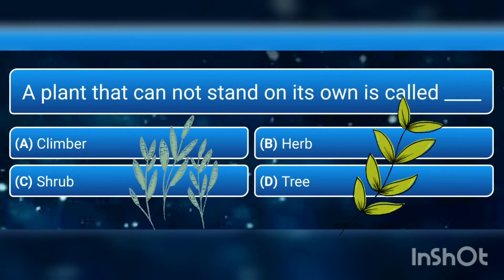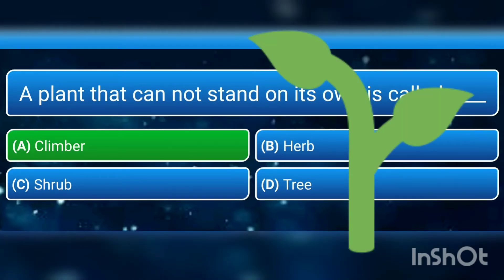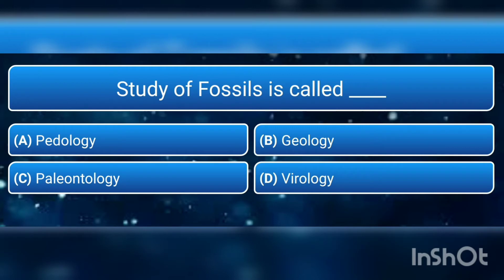The next question is: a plant that cannot stand on its own is called — a) climber, b) herb, c) shrub, or d) tree? The answer is a) climber. They need support to stand upright.